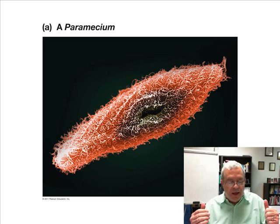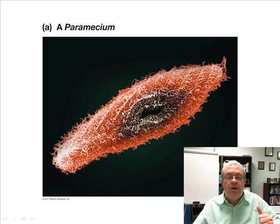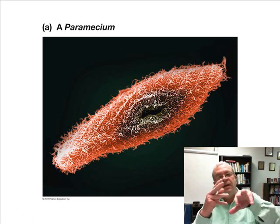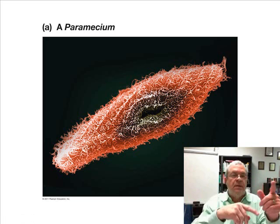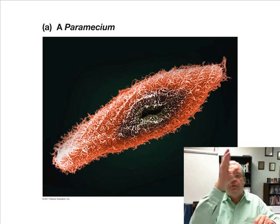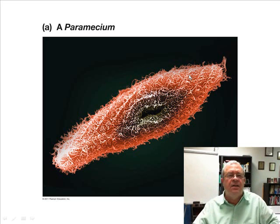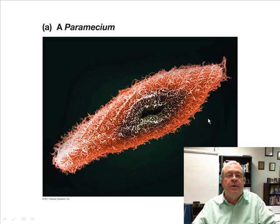Last question: how does a paramecium move? You see all these little hairs — they are called cilia, C-I-L-I-A. In a living protist, they beat in unison and move the paramecium all over the place, wherever it wants to go. How many cells big is a paramecium, by the way? One cell big. It's a very complicated little cell.